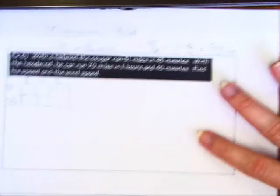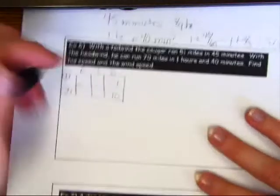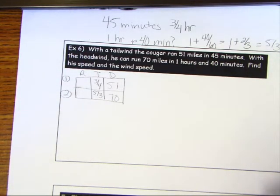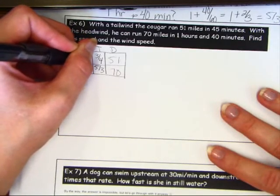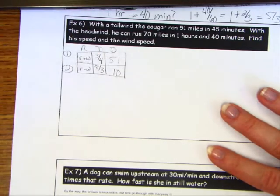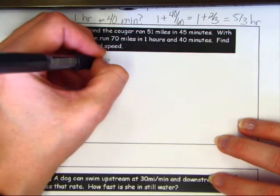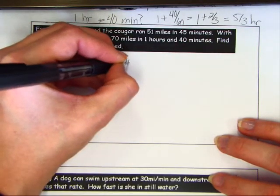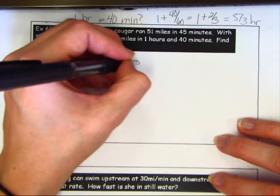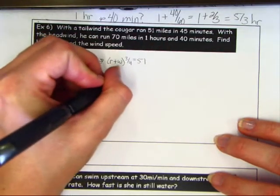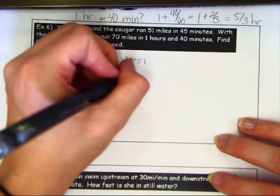So three-fourths of an hour goes in for the first time and five-thirds goes in for the second time. For the rate, a tailwind is r plus w and a headwind is r minus w — the first helps, the second works against. Our equations are: (r + w)(3/4) = 51 and (r − w)(5/3) = 70.